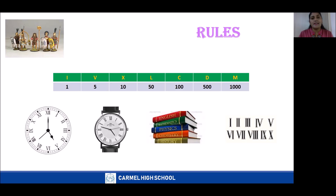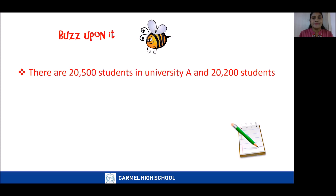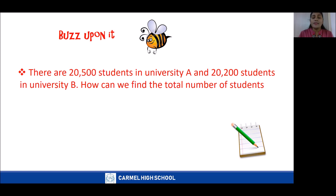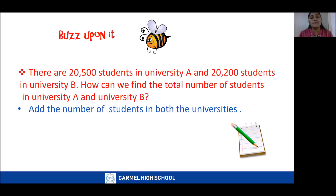With this, we shall begin our today's lesson. Let me ask you one question. There are 20,500 students in University A and 20,200 students in University B. How can we find the total number of students in both universities? We need to add the number of students in both universities, and we get 40,700 students.